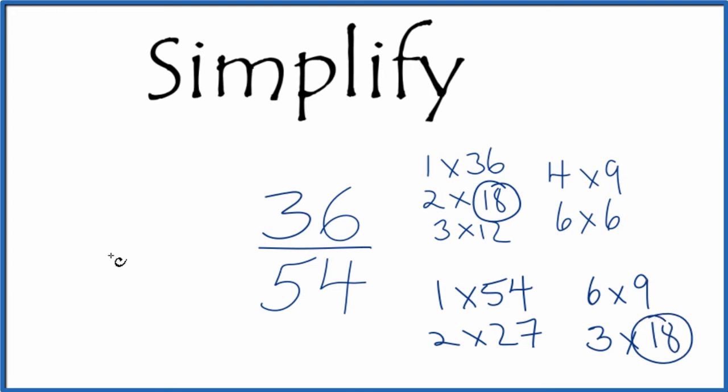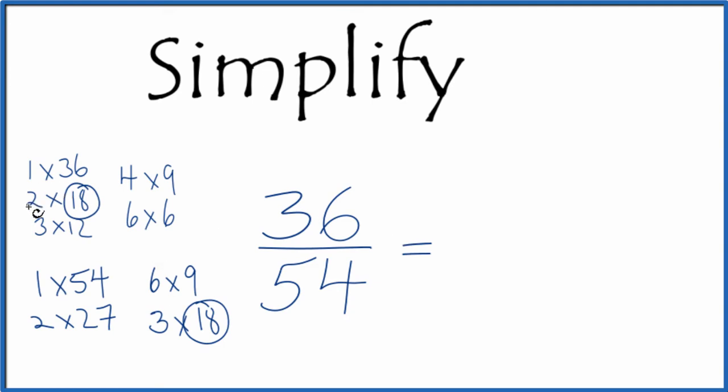So we could say 2 times 18 equals 36, and 3 times 18 equals 54. Since we have 18 on the top and the bottom, let's just cross that out.